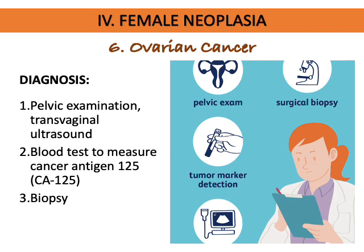Diagnosis of ovarian cancer includes pelvic ultrasound, pelvic examination, or transvaginal ultrasound using sound waves to detect tumors, though these cannot confirm malignancy. A biomarker specific for ovarian cancer — though also affected in uterine cancer — is the blood test for cancer antigen 125 or CA-125. The confirmatory test is biopsy.